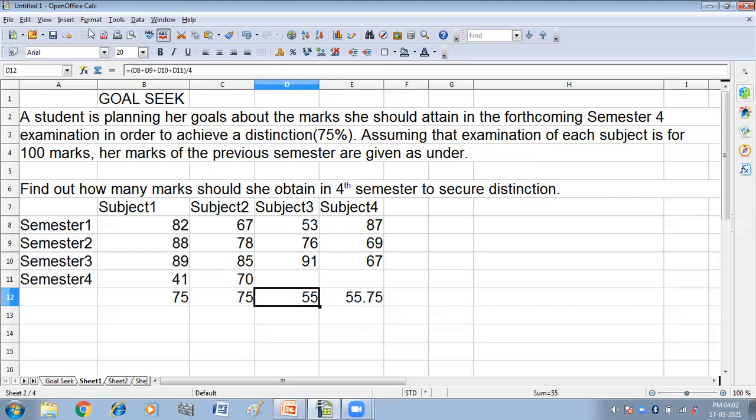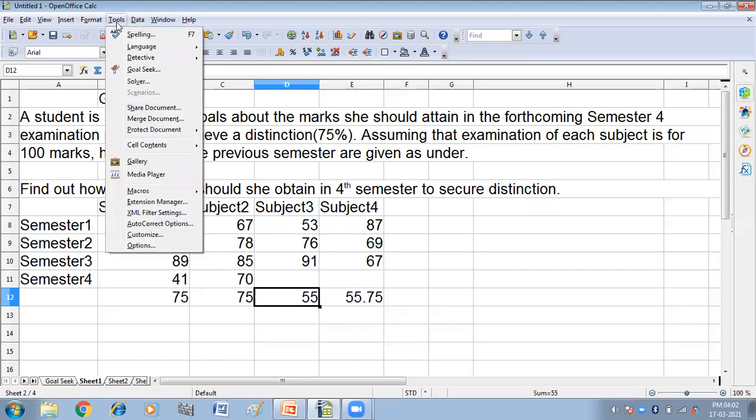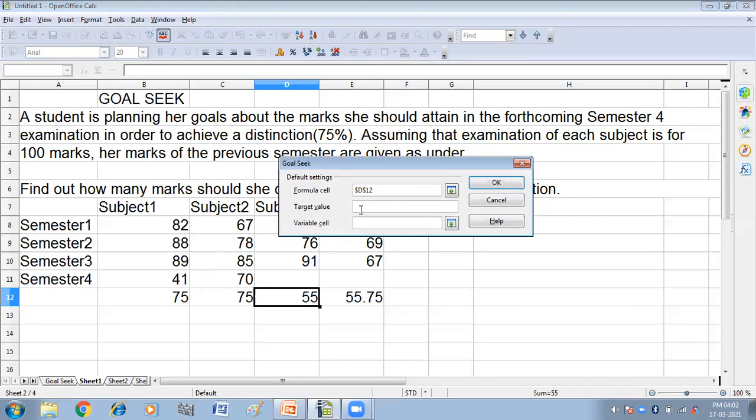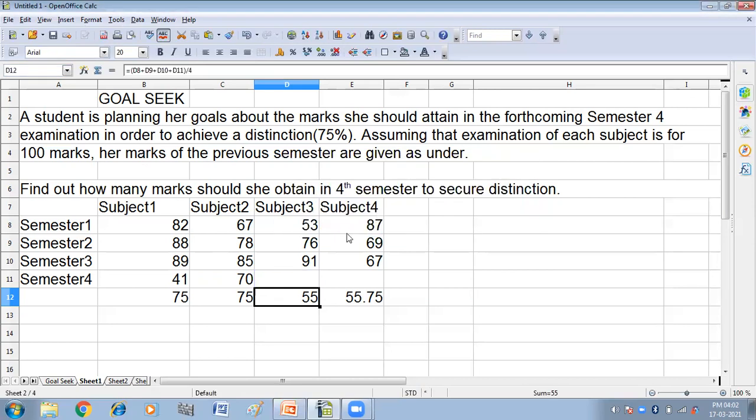Again we will do: click on the Tools menu and then the Goal Seek. I want 75 percent and my variable cell is this, cell D1. OK, yes. So in subject 3 I have got 80 marks to get 75 percent.